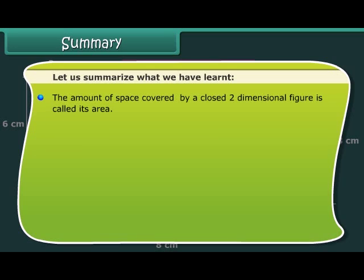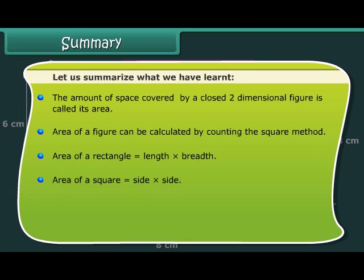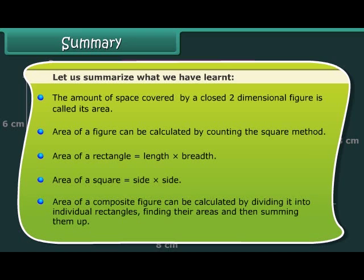Let us summarize what we have learnt. The amount of space covered by a closed two-dimensional figure is called its area. The area of a figure can be calculated by the counting the squares method. The area of a rectangle equals length multiplied by breadth. The area of a square equals side multiplied by side. The area of a composite figure can be calculated by dividing it into individual rectangles, finding their areas, and then summing them up.